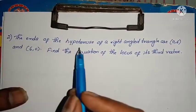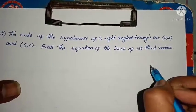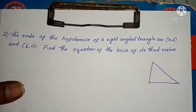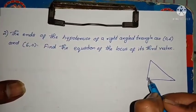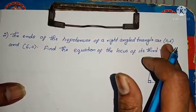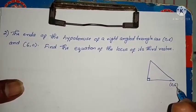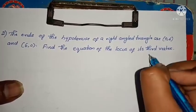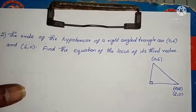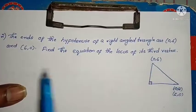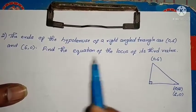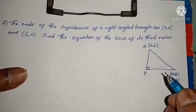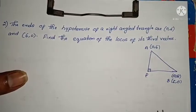Next problem. Question: the ends of the hypotenuse of a right angle triangle are (0, 6) and (6, 0). Find the equation of the locus of its third vertex. Let A = (0, 6), B = (6, 0). Let P be the third vertex with P = (x, y).